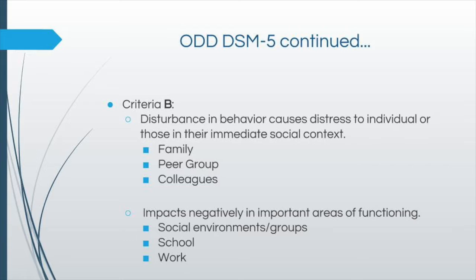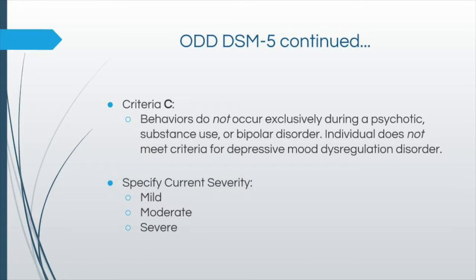This disturbance in behavior needs to cause distress to the individual or those in their immediate social context, including family, peer group, or colleagues. It will also negatively impact important areas of functioning such as social environments, peer groups, school, work, et cetera. Additionally, these behaviors do not co-occur with any psychotic or substance use disorder or another disorder that can better explain the behavior over ODD. There is a severity specifier of mild, moderate, or severe — mild being one setting, moderate two or more settings, and severe three or more settings.